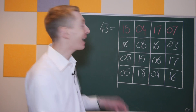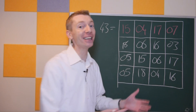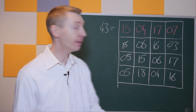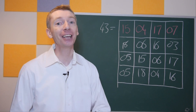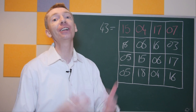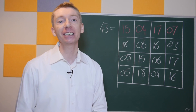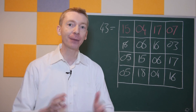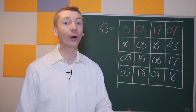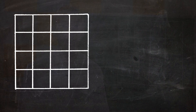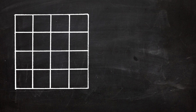Now I want to show you how you can make one of these for yourself. The reason I used Leonard Euler's birthday is because the method I'm going to teach you is actually called the Euler method. So what we're going to create is an Euler square.